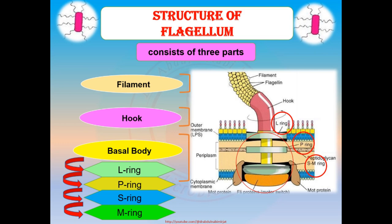The M-ring, also called the C-ring, is the membrane or cytoplasmic membrane ring. This ring provides movement to the flagellum. The hook is a short, highly curved tubular structure which connects the basal body — the flagellum motor — with the filament.